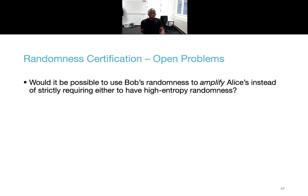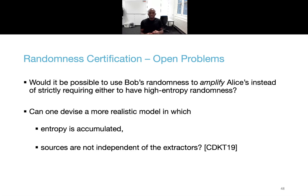There are certain questions that remain open. The first is whether Bob's randomness could be used to amplify Alice's instead of requiring in the model that either of them must have high entropy randomness. It's not clear whether it would be sufficient to have both of them have access to moderately high entropy randomness, and then use these two to amplify the randomness to generate the resulting key. The second problem is to give a model in which entropy is accumulated over time as is actually done in practice instead of assuming that it's provided in a single chunk. It would also be more realistic to have a model in which the randomness sources are not independent of the extractors, as the randomness sources are in practice timing interrupts and the extractors are hash functions, and these two are then obviously correlated and not independent. These problematics were already considered by Coretti et al. at Crypto 2019 in the context of PRGs, and it would be interesting to see if it applies in the context of practical key generation.